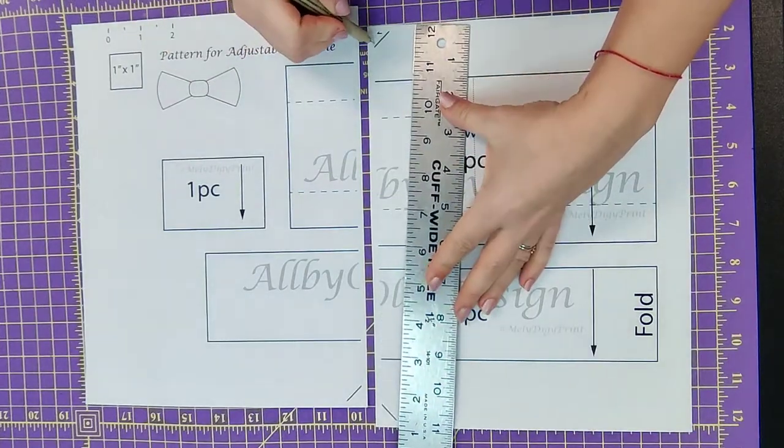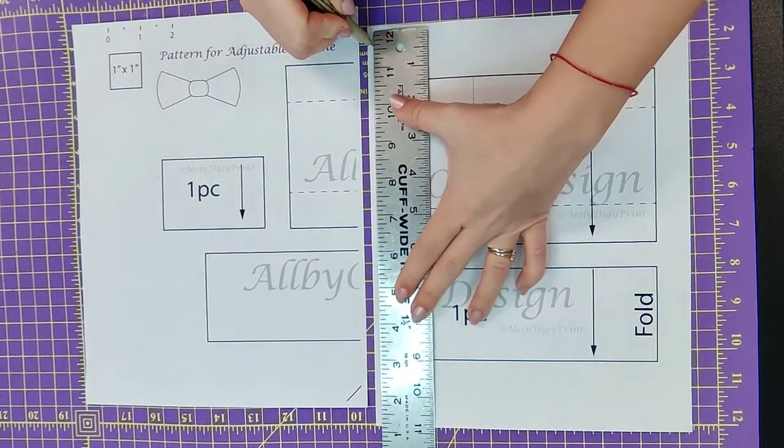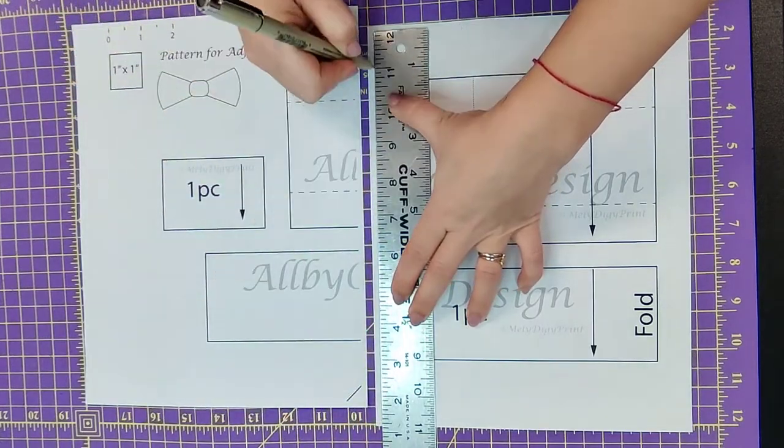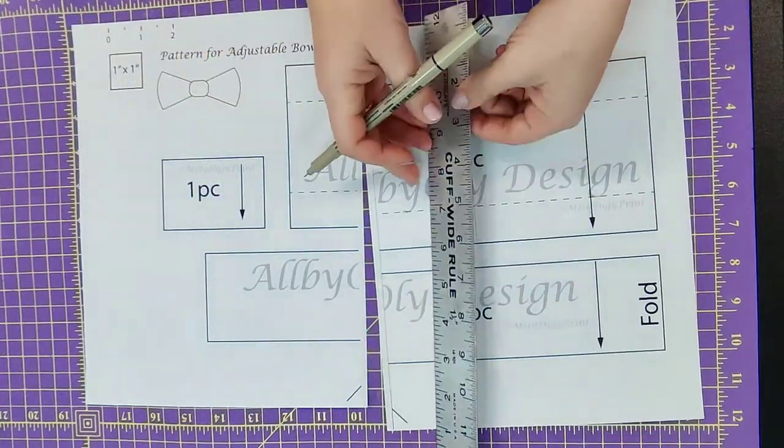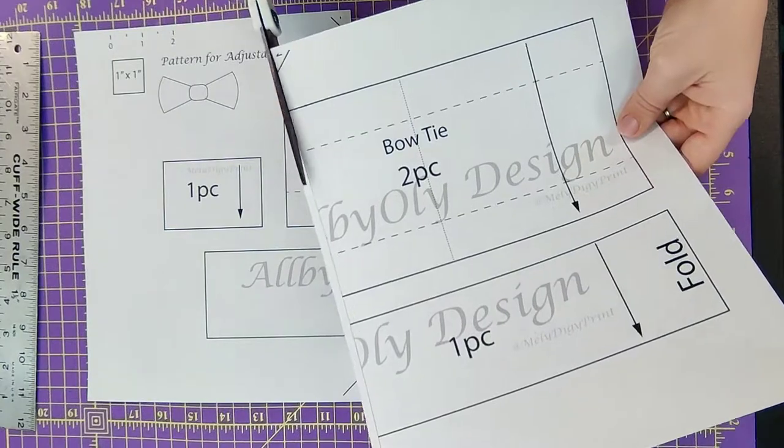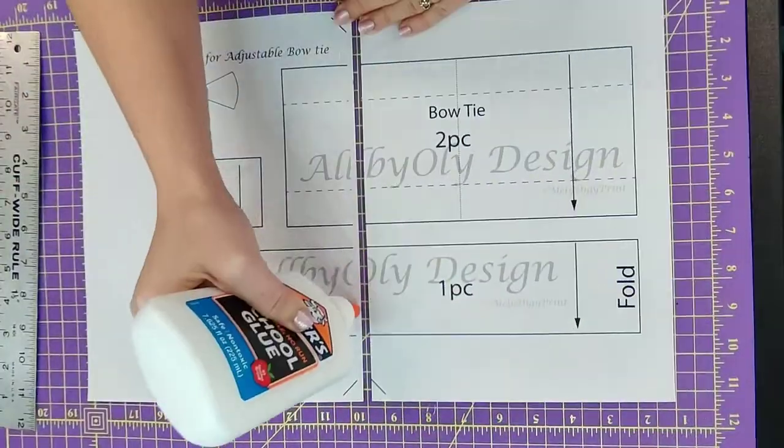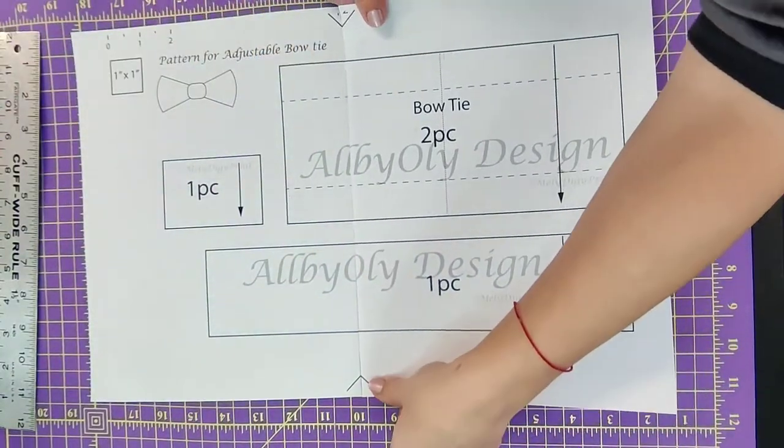First we're going to trace the line from one side to the other side, and then we're going to cut one side only. Now we're applying the glue and connect the lines.